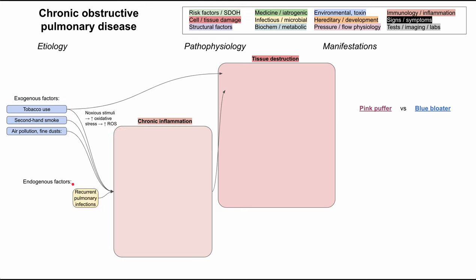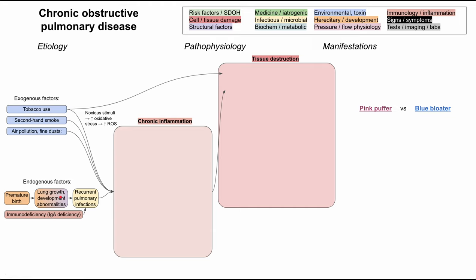Next, let's look at the endogenous factors. A big factor that can cause COPD is recurrent pulmonary infections. This can happen due to an immunodeficiency such as IgA deficiency, where you have recurrent mucosal infections. Recurrent pulmonary infections cause recurrent episodes of inflammation in the lungs, and that inflammation can cause tissue destruction leading to COPD. You can also have recurrent pulmonary infections from lung development problems — if the lungs don't develop normally, they won't have normal ciliary clearance mechanisms, and those infections can again cause inflammation and tissue destruction.